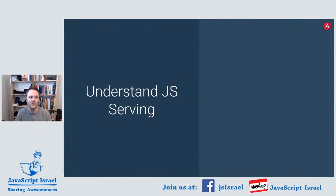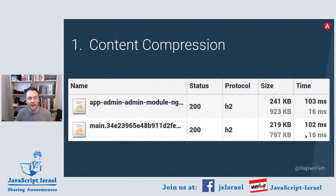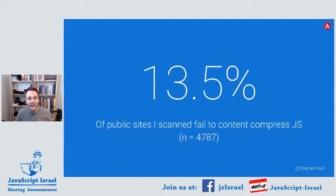The last thing I want to talk about is understanding JavaScript serving, because DevOps plays a really important role in shipping good applications. The number one thing is content compression. An admin module that's about 923 KB on disk is almost four times smaller over the network when we use content compression — just 241 KB. We're saving three quarters of our bundle size just by having content compression turned on. Around 13% of sites are still failing to enable content compression. If you're using a CDN or content host, all of this happens automatically — we highly recommend that.